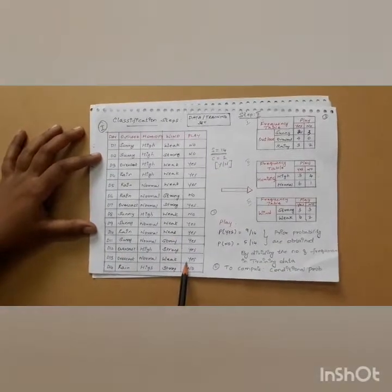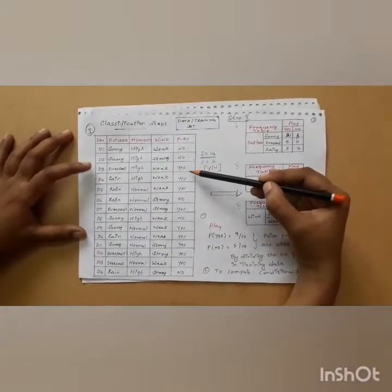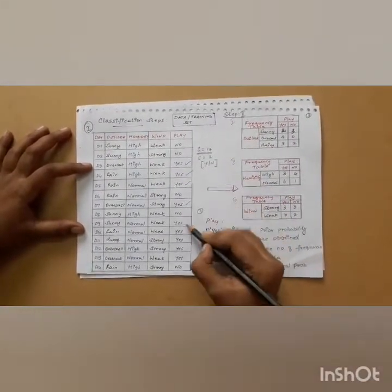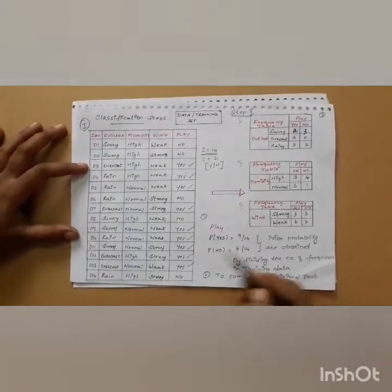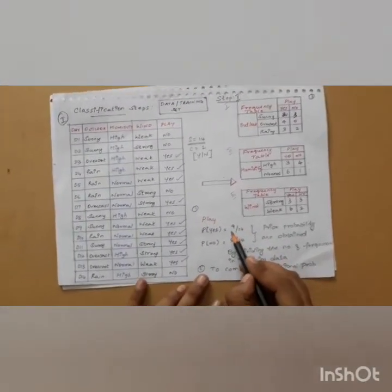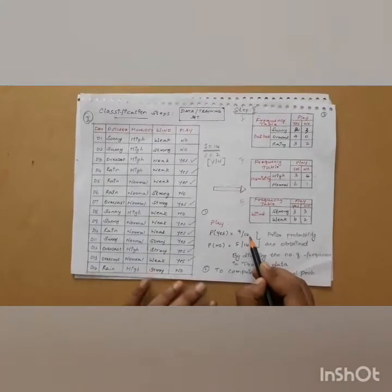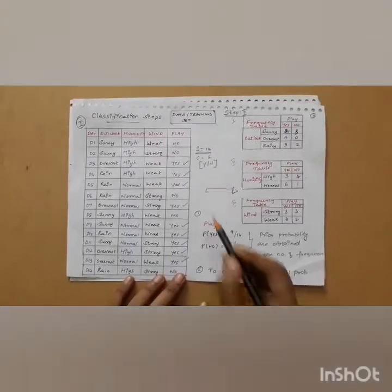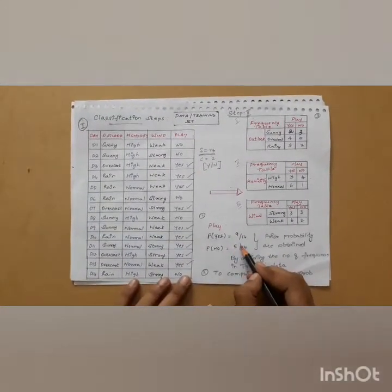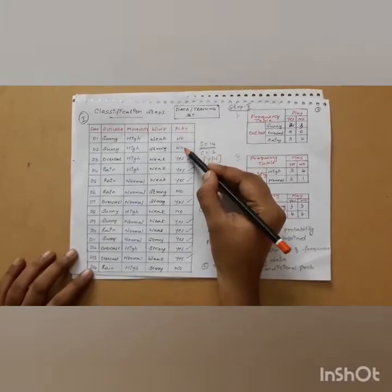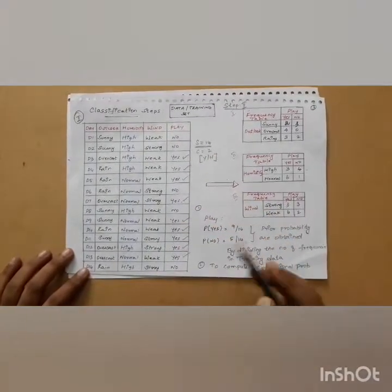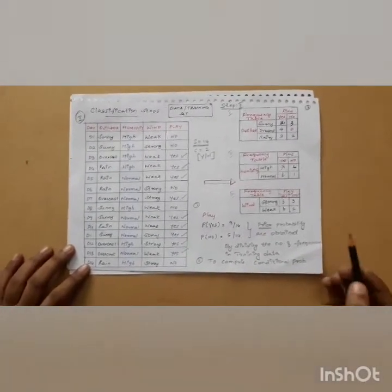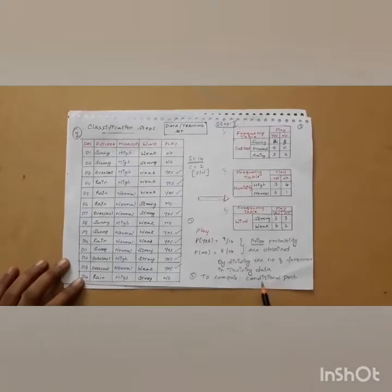In the 14 instances, 9 possibilities are given for playing yes — counting 1, 2, 3, 4, 5, 6, 7, 8, and 9. So 9 is the total number of yes divided by the total number of instances. Then the probability of no has to be computed: apart from the 14 instances, counting the no's gives 1, 2, 3, 4, and 5 — so it is 5 by 14. After computing the prior probability, you have to compute the conditional probabilities.